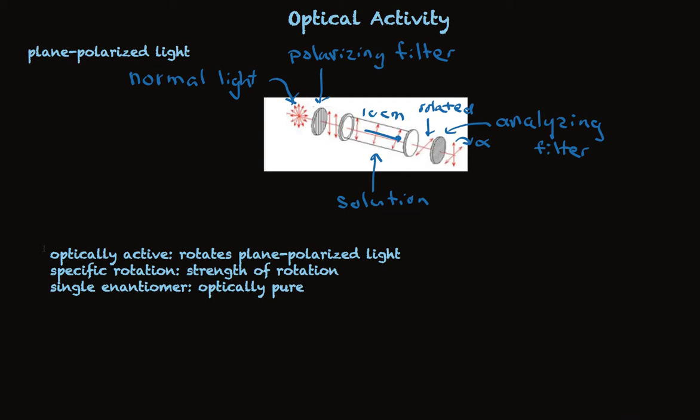Optically active solutions may be partially pure. And the extent of their purity is called enantiomeric excess, or EE. It's a measure of optical purity.